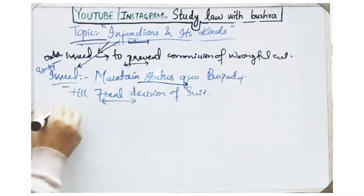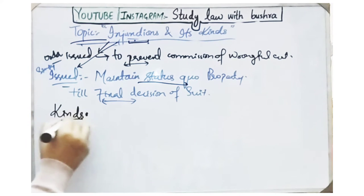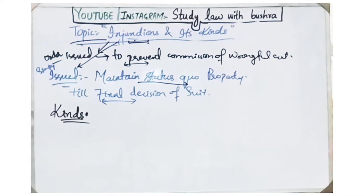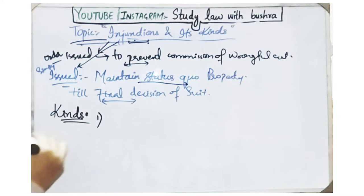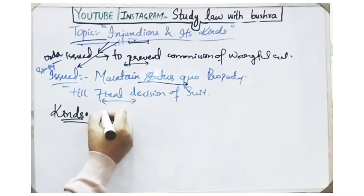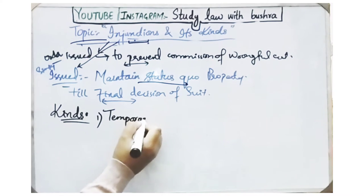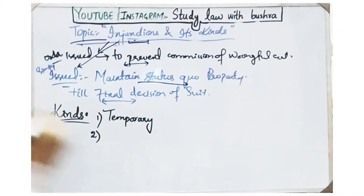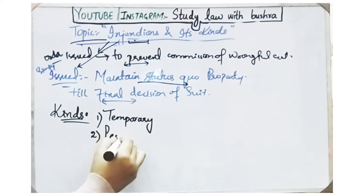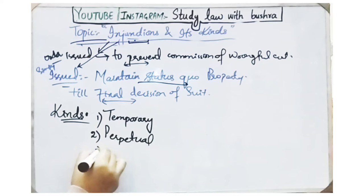Now injunctions have different kinds, which is the main part of today's video. There are four different kinds of injunctions: number one, temporary injunctions; number two, perpetual injunctions; number three, prohibitory injunctions.